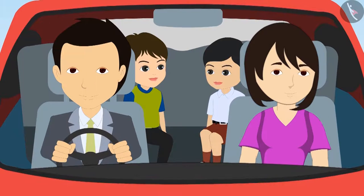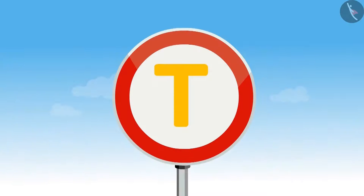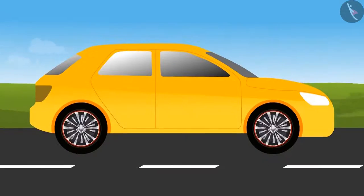Dholu says: 'Come, let us play a game of find the angle!' Bholu agrees. Dholu points out a sign that has one right angle. Bholu looks more carefully and spots two right angles in the sign, not just one.